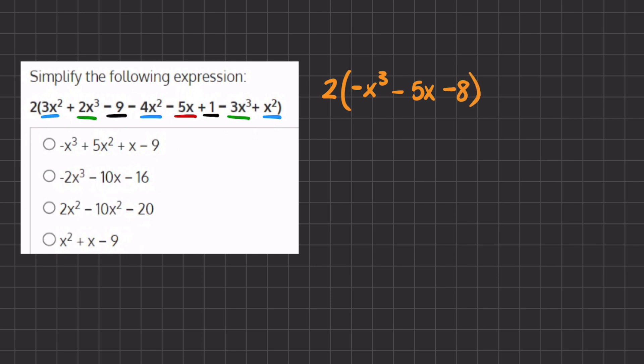So now that we've collected all of the like terms, we can simplify by distributing this 2 into our big parentheses right over here.